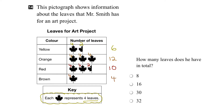So if we want to figure out the total number of leaves that Mr. Smith has, we simply add up all of these items in our column here. We go six plus twelve is eighteen, plus ten is twenty-eight, plus four is thirty-two. Looking at our list of options, the last option is the right answer — Mr. Smith has thirty-two leaves for his art project.